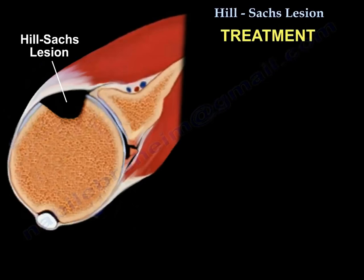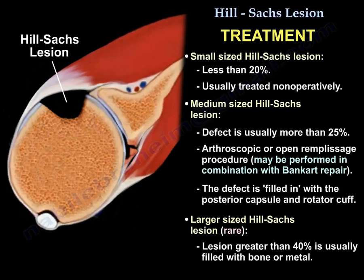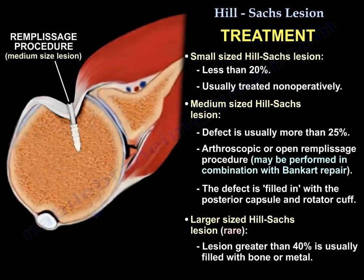Regarding treatment: a small Hill-Sachs lesion, which is less than 20%, is usually treated non-operatively. A medium-sized Hill-Sachs lesion, where the defect is usually between 20 to 40%, is treated with an arthroscopic or open remplissage procedure, which may be performed in combination with Bankart repair. The defect is filled with the posterior capsule and the rotator cuff, usually the infraspinatus.